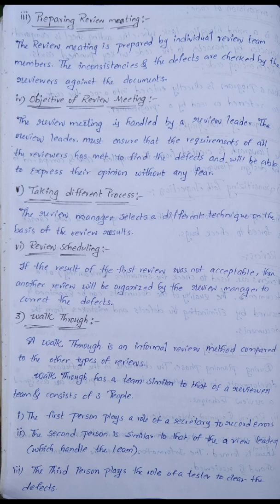Review scheduling: if the result of the first review was not acceptable, then another review will be organized by the review manager to correct the defects. The review manager selects different techniques based on the review results to approach and correct identified defects.